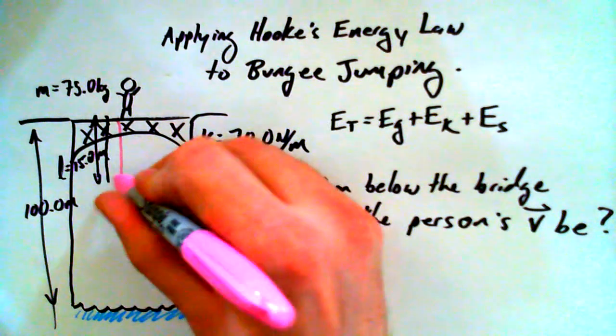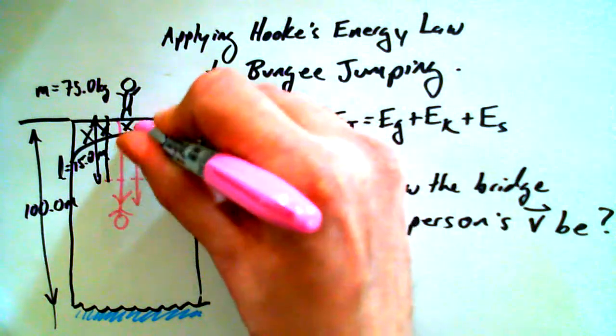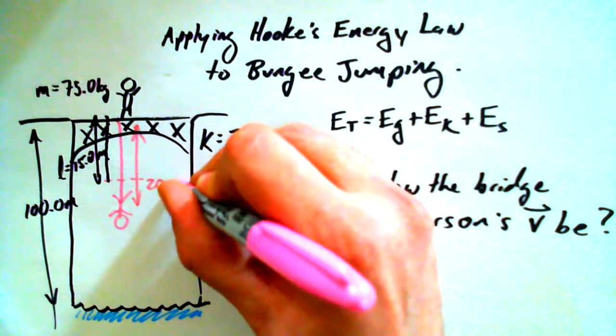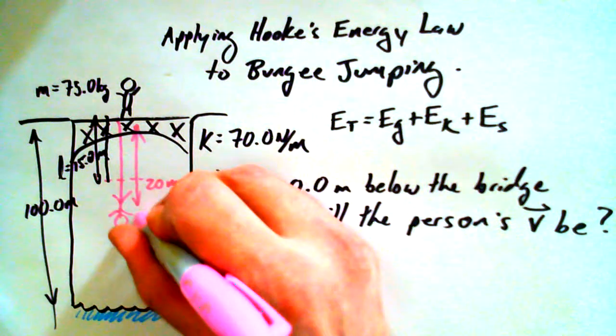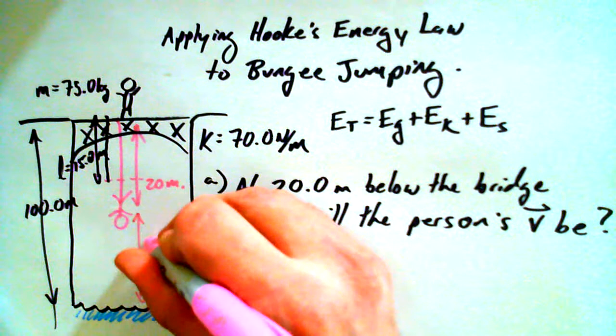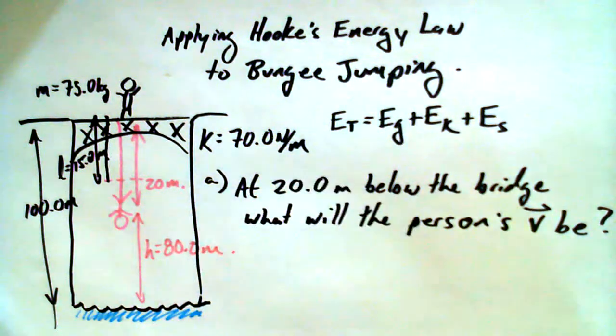What we're saying is that we have a person that's going to be down at this height, a little bit lower than 15 meters, 20 meters down. And if they're 20 meters down, how far are they above the ground? Anybody want to say 80 meters? So we've got a height of 80 meters. That's important. Now, if they're 20 meters below the bridge, does that let us get a delta X value?